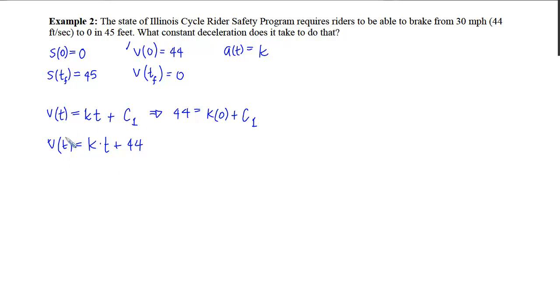Now if I go backwards again, that will connect my velocity to position. So I'm going to ask myself, what did I take the derivative of with respect to time that gave me kt plus 44? Well k is a coefficient, so I move through it. The antiderivative of t is a t squared over 2, and the antiderivative of 44 is a 44t. Now again, because we're doing an antiderivative, we get an entire family of curves and we get that arbitrary constant.